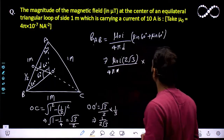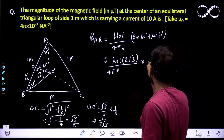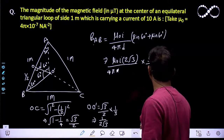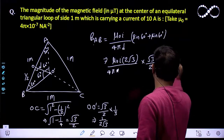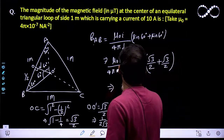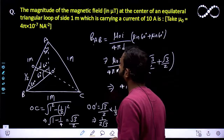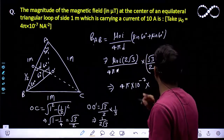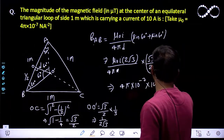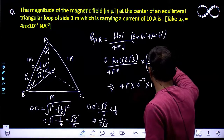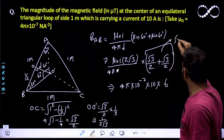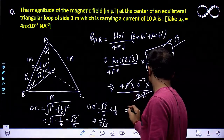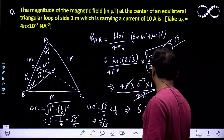Now sin 60° equals √3/2, so we have √3/2 plus √3/2, which gives √3. The value of μ₀ is 4π × 10⁻⁷. The value of I is 10 amperes. Putting in all the values: (4π × 10⁻⁷ × 10) / (4π × (1/2√3)) × √3. The 4π cancels out, and simplifying, the value comes to 6 × 10⁻⁶ Tesla. This is the magnetic field due to one side of the equilateral triangle.